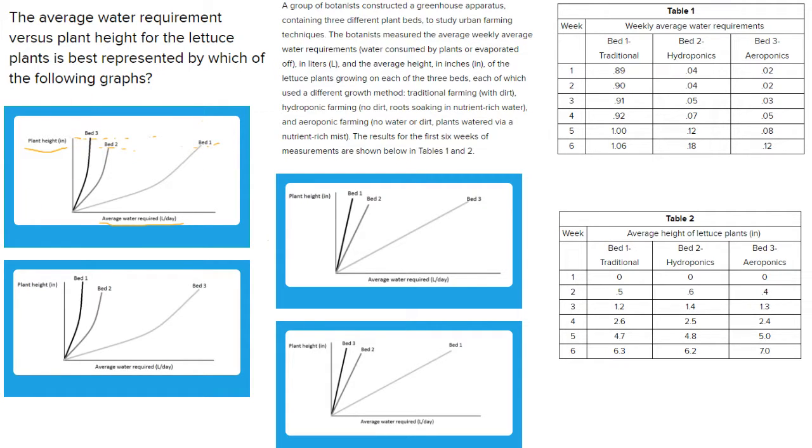So answer choice one is a good option, because it matches the data for what we'd expect from table one and table two. So let's look at our other options and see if we have the same scenario. We can eliminate answer choices B and C very quickly, because we can see that they actually have the order for water requirement switched. So they have bed one using the least amount of water, as you can see, because it's the least far along this x-axis here. Both of these have that same situation. And so we have to eliminate both of them, because we know that bed three actually uses the least amount of water, not the most. So these are both gone.